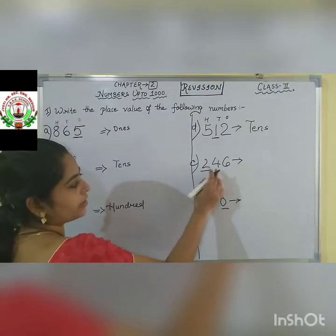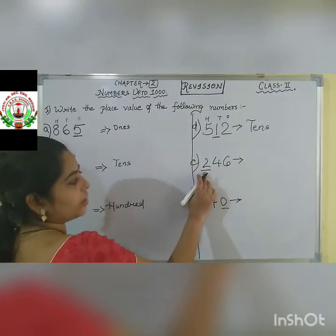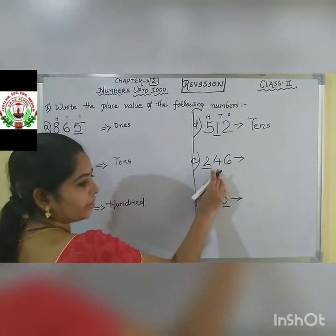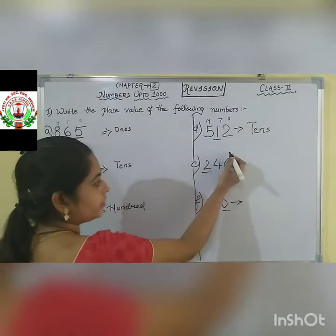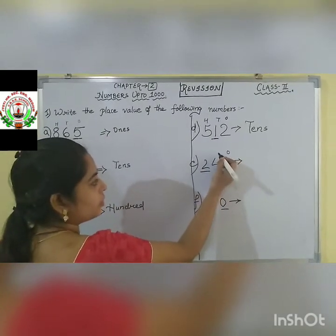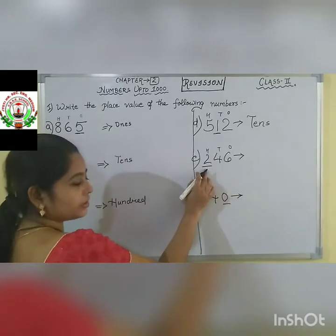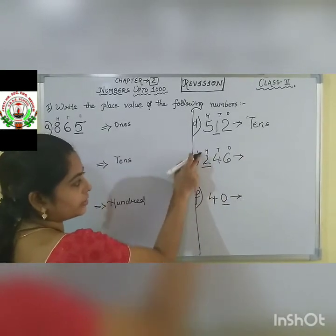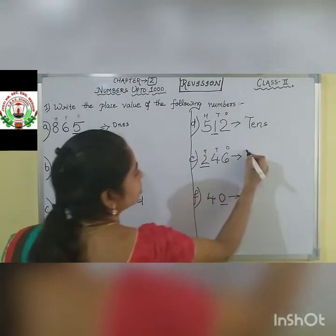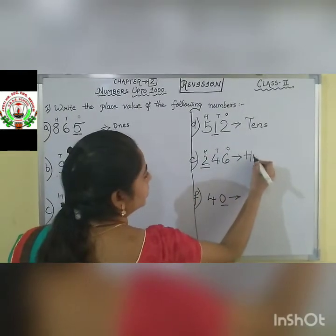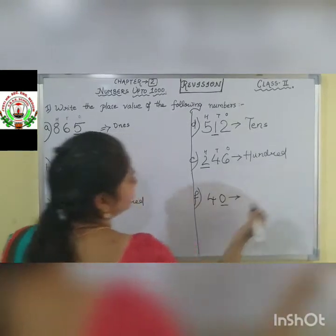Next question: 246. Here the place value — 1's, 10's, 100. So this 2 comes under which column? 100's column. So we will write down as 100.